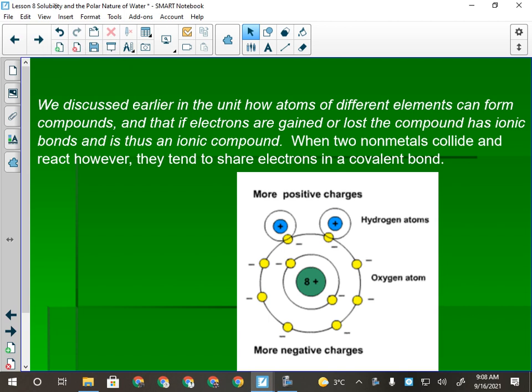All right, so yesterday we were talking about solubility. We've been over all the terminology, we've been over how to use your solubility chart, and what we're going to go over today is the polar nature of water. So we're going to talk about what it means to be a polar molecule, why water is a polar molecule, and then the behaviors that polar molecules, especially water, exhibit, and why they are basically the exception to every rule we have.